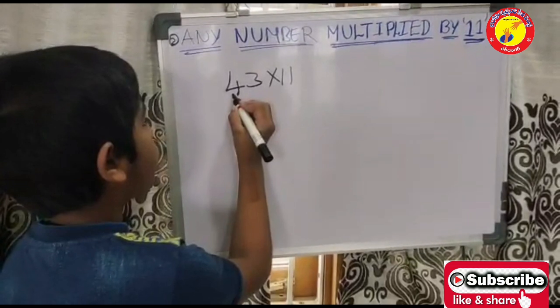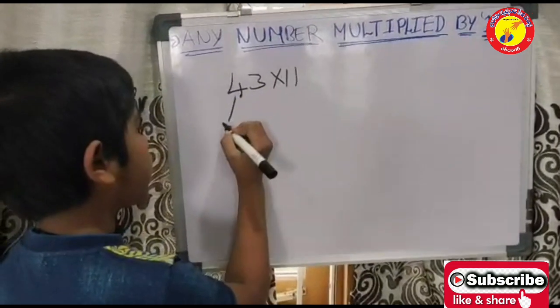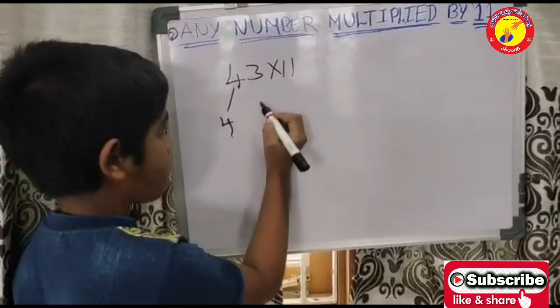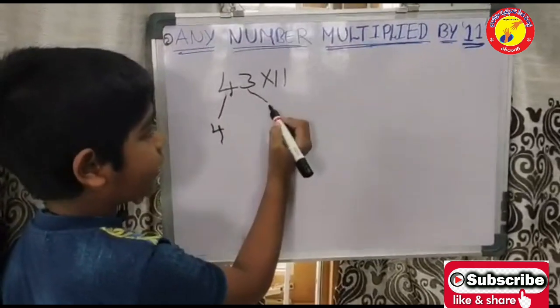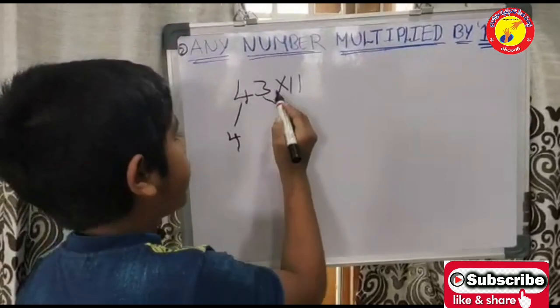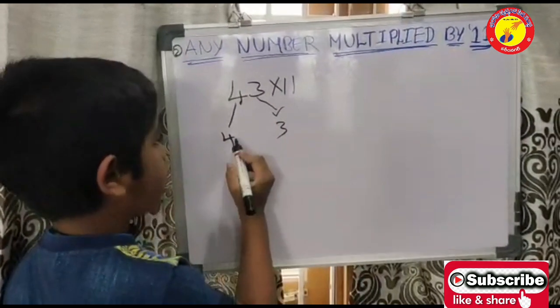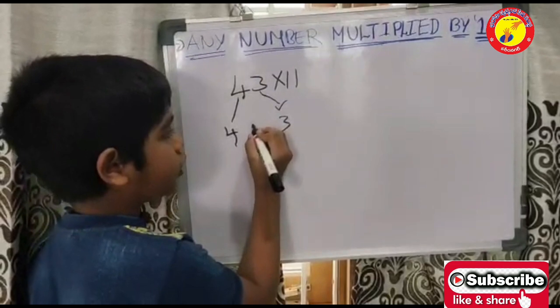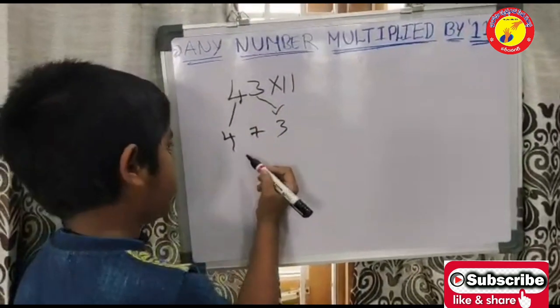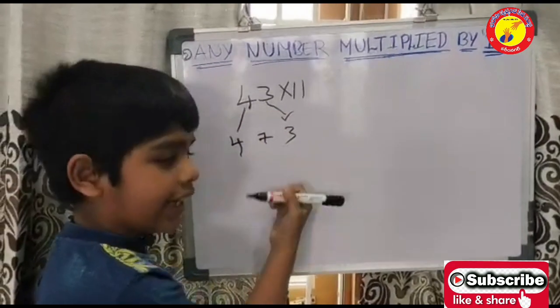Now, I will take 4 here. And leave some space. And write 3 here. And add these two numbers. 4 plus 3 is equal to 7. 43 into 11 is equal to 473.